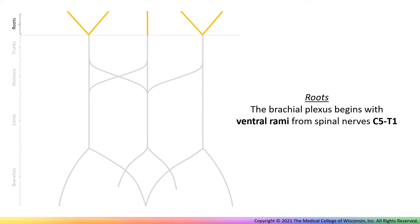Now let's label the roots, which are composed of ventral rami from spinal nerves C5, C6, C7, C8, and T1.